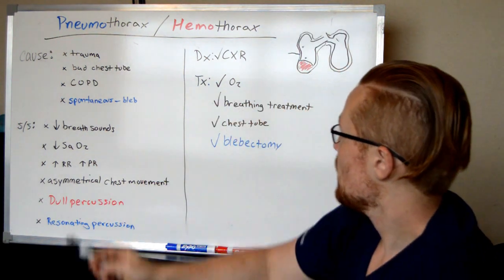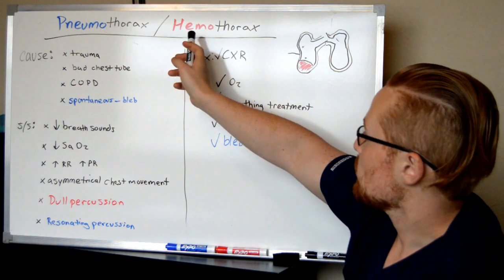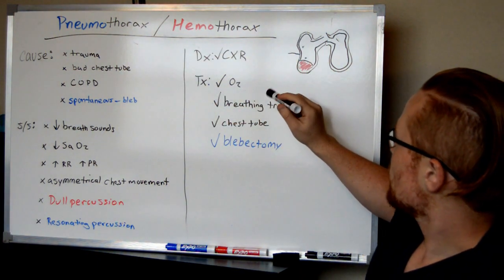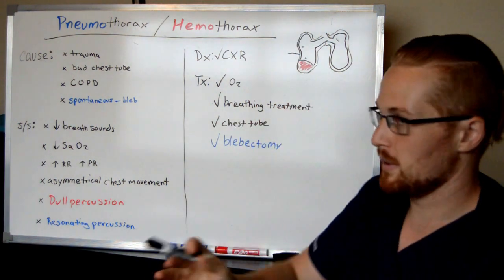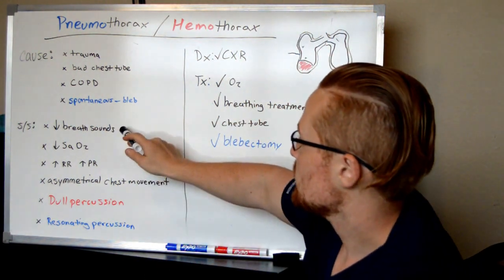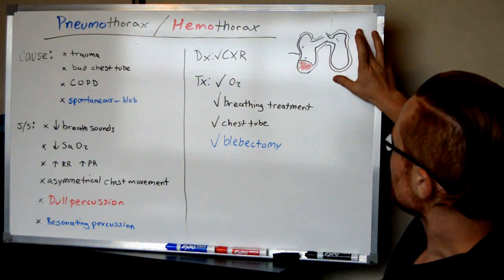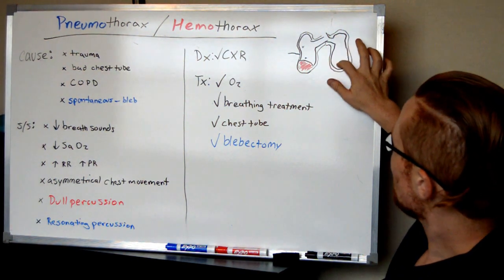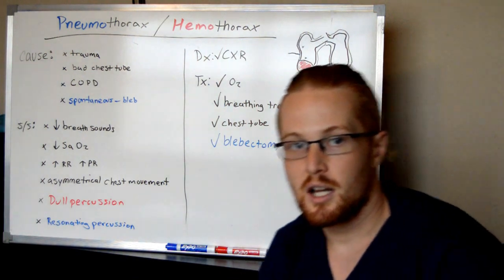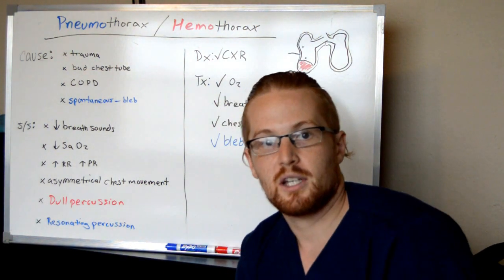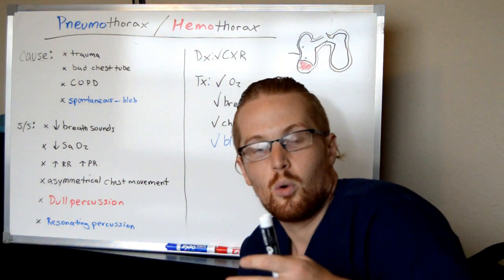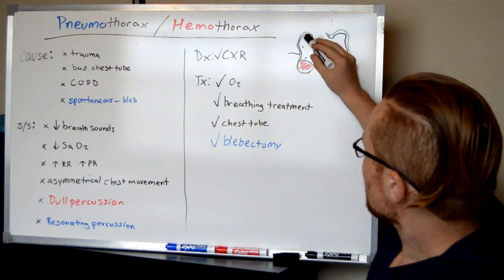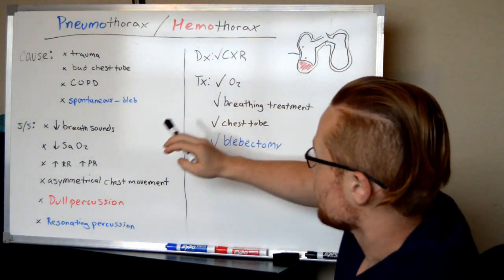What are signs and symptoms for pneumothorax and hemothorax? The same problem is going on — that space is being used up and the lung can't expand. You're going to have decreased breath sounds. If I listen on one side there's no problem, but on the affected side I may not hear any lung sounds at all because there's air or blood blocking those sounds. That absence of breath sounds is a telltale sign.